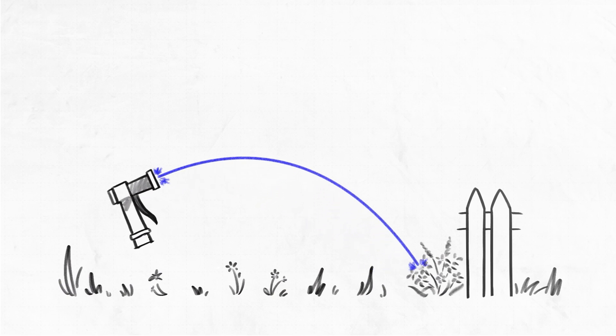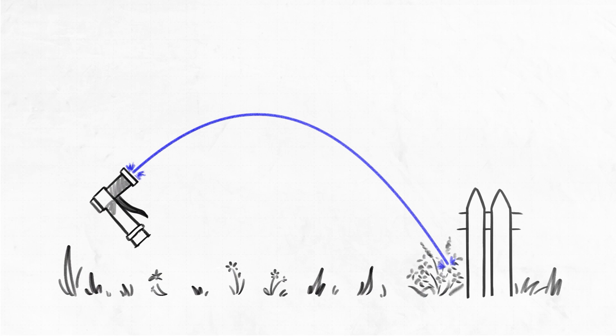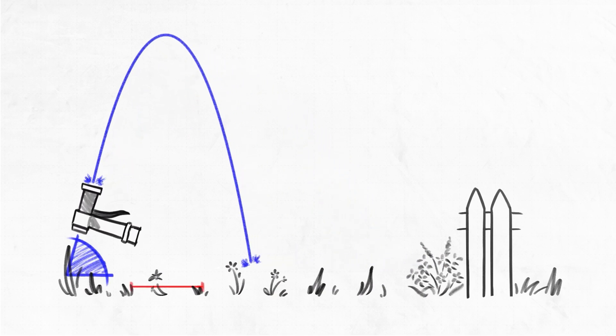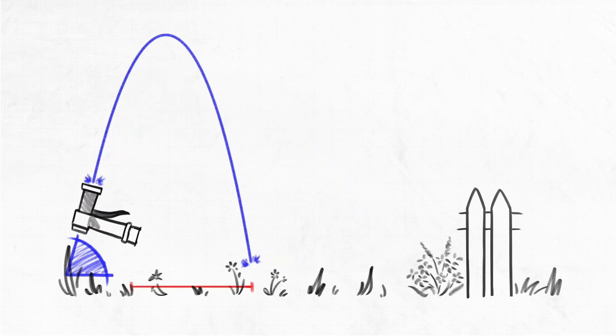We start to raise our arm up and up and up to try to maximize the distance that water is going to travel. As we raise our arm up though, we eventually send that water jet too high and we're losing distance because it's going too high in the air.